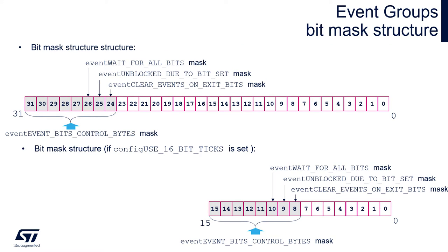Event groups use 16 or 32-bit variables to store events, where each event corresponds to one bit set within this variable. This variable is defined in event_groups.c as type EventBits_t. It will be a 16-bit unsigned value if configUSE_16_BIT_TICKS is defined in FreeRTOSConfig.h, or a 32-bit unsigned value otherwise. The most significant 8 bits are called control bits, defined as event bits control bytes, and are reserved for control data passed via event functions.